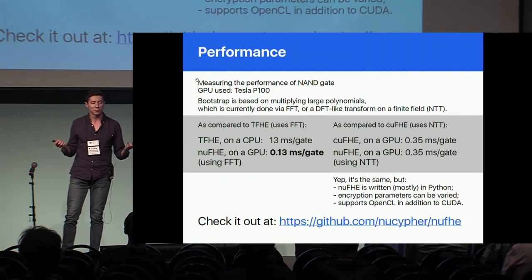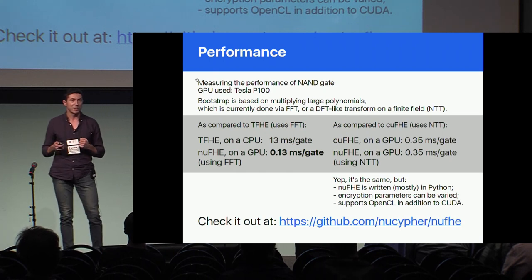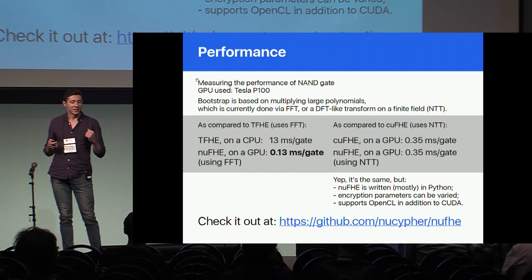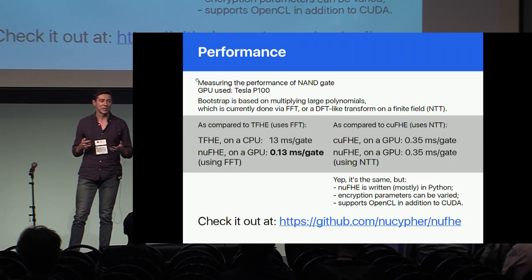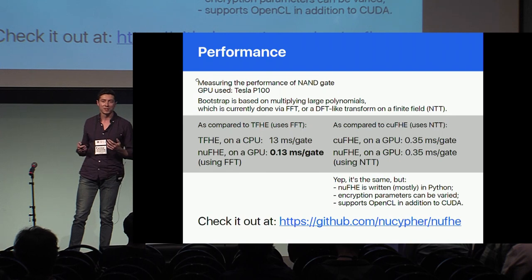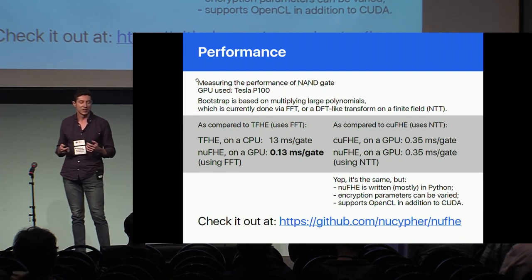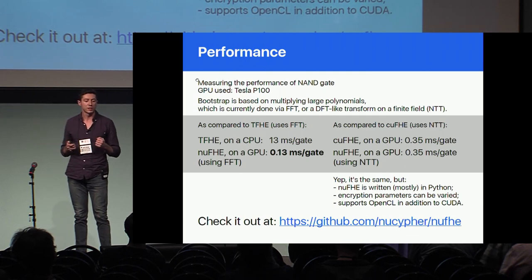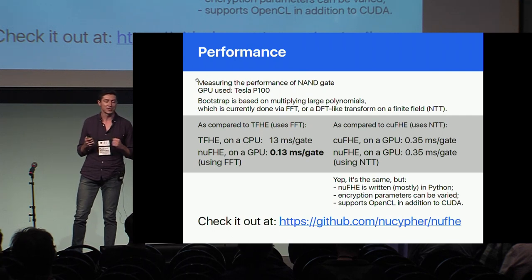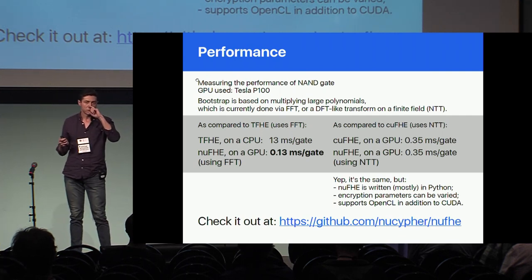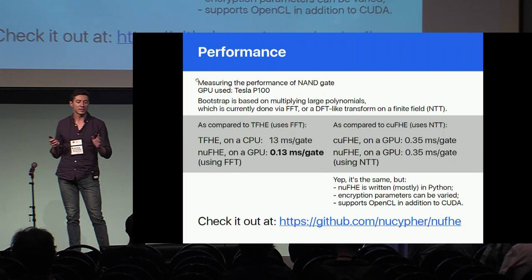For the most important part — performance — we compare it with TFHE. It's not entirely fair because TFHE uses the CPU, but we have a hundred times speedup compared to TFHE, using FFT for bootstrapping, which is what TFHE uses. We can also compare it to QFHE, which uses NTT — a Fourier-like transform on finite fields — and it has about the same speed.